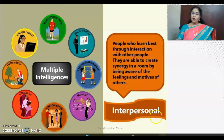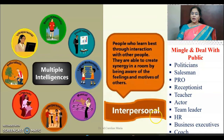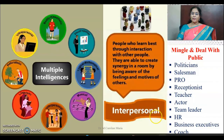Interpersonal intelligent people learn best through interaction with other people. They are able to create synergy in a room by being aware of the feelings and motives of others. Examples include politicians, salespeople, receptionists, teachers, actors, team leaders, HR people, business executives, and coaches. All these people engage in a lot of negotiation.